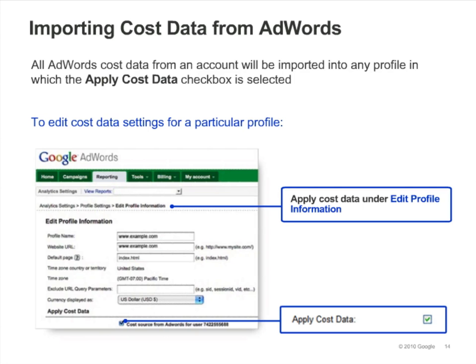All AdWords cost data from an account will be imported into any profile in which the Apply Cost Data checkbox is selected. Make sure both your AdWords and Analytics accounts are set to the same currency so that ROI data is accurately calculated. If you don't want cost data imported into a particular profile, you can edit the profile settings. Within the Edit Profile Information screen, find the Apply Cost Data checkbox and deselect it. Note that Google Analytics is only able to import cost data from AdWords and not from other ad networks.